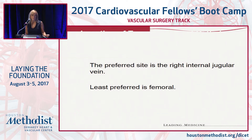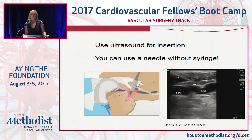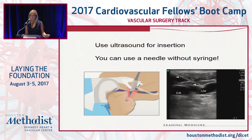The preferred site is the right IJ vein; the least preferred is the femoral. You should use ultrasound-guided access — it's pretty much standard of care at this point, except in an emergency. It's important to actually use your ultrasound: many people will see their needle at the superficial aspect and think that's directing them to the vein, whereas the needle has actually passed out of the ultrasound beam. You have to really see your needle going into the vein to avoid any unplanned injuries. These patients have enough venous pressure that you'll get back bleeding without a syringe.